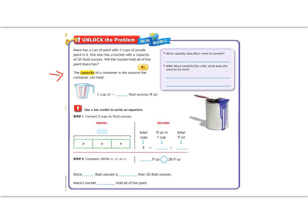Mara has a can of paint with 3 cups of purple paint in it. She also has a bucket with a capacity of 26 fluid ounces. Will the bucket hold all of the paint that Mara has? So first off, what capacity does Mara need to convert?